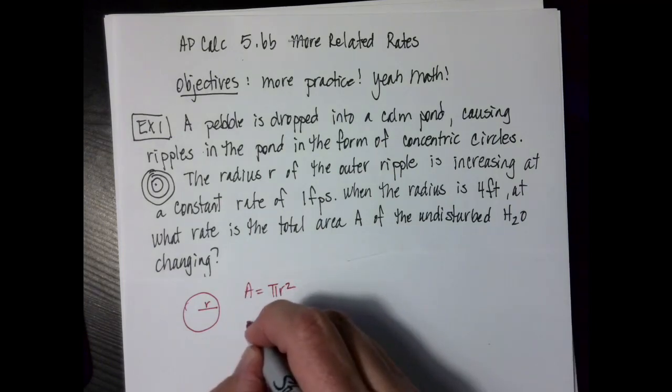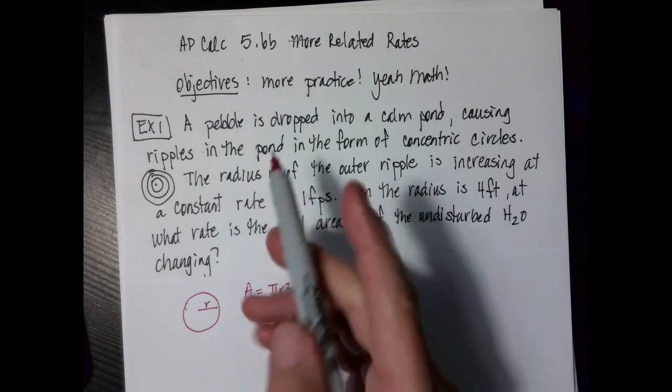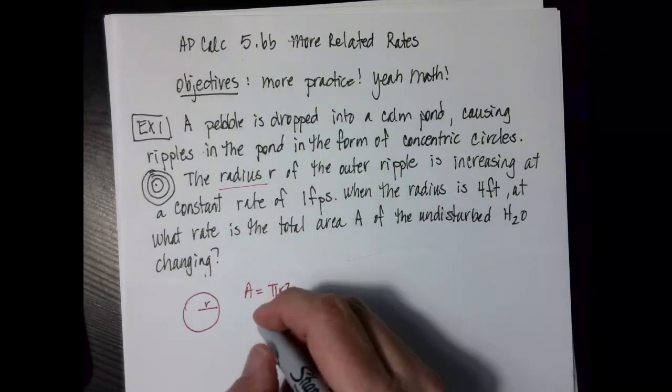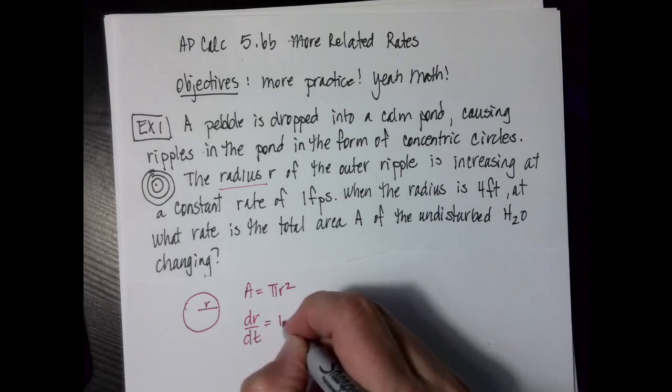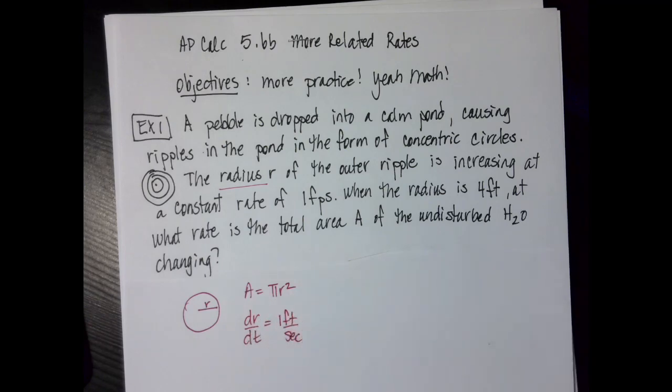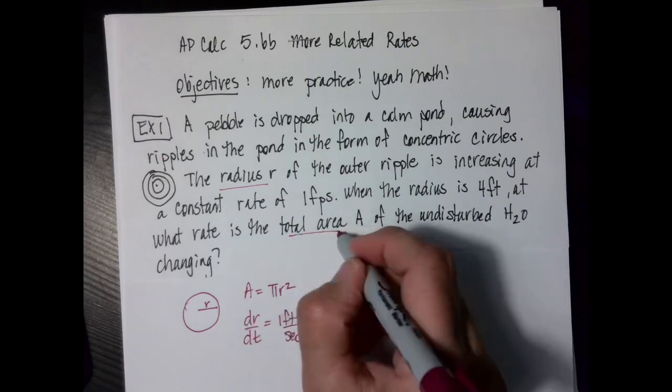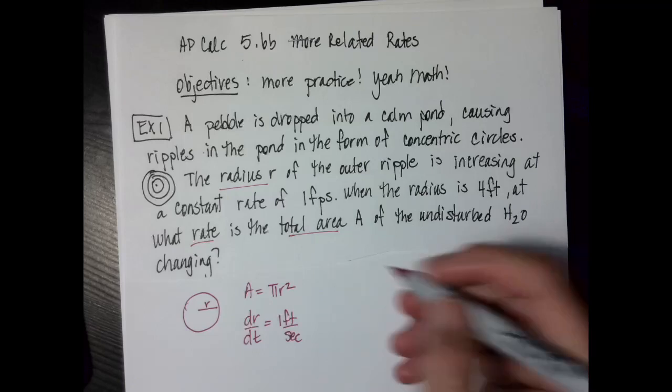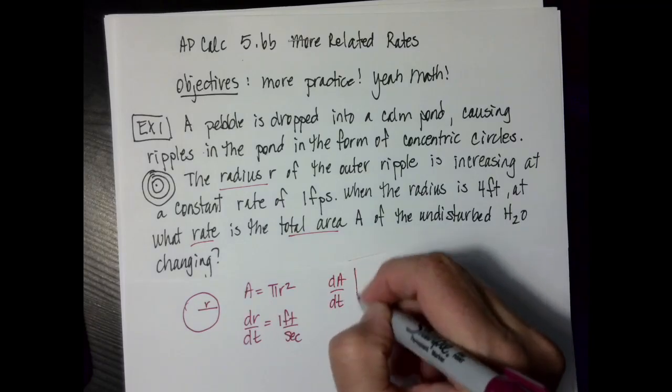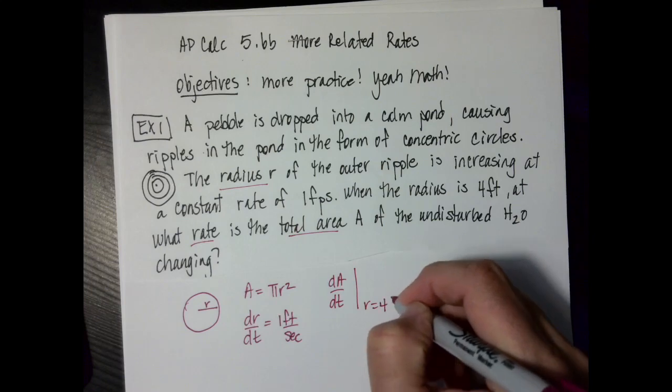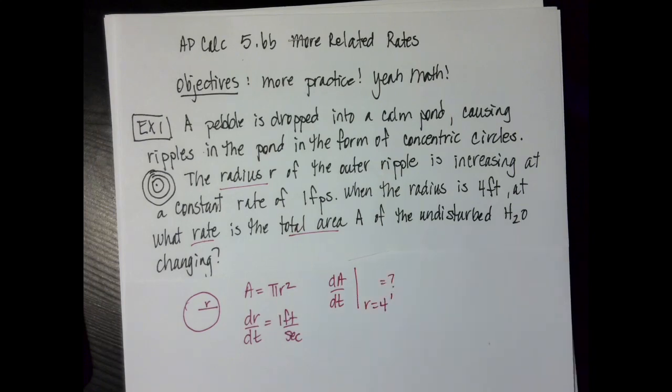The radius is increasing at a constant rate, so I know that dr over dt is going to equal one foot per second. And I'm actually looking for how fast the area is changing. So I'm looking for da over dt when r is equal to four feet, and that's my task.